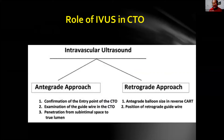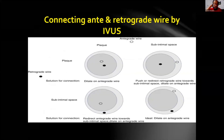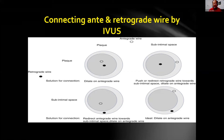IVUS is another important tool for retrograde cases — sometimes, not always. The role of IVUS is to know the balloon size in reverse CART and to know the position of the two wires in the space. There are only four things that might happen: both antegrade and retrograde wires could be in the same space — either intimal or subintimal — or one could be intimal and one subintimal. According to wire position, we can decide to create a bigger balloon or redirect one wire into the same space and then connect them.